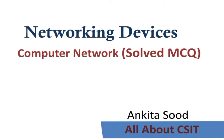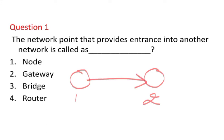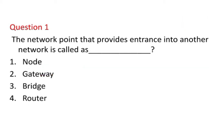So here we are going to discuss multiple choice questions related to the functionalities and working of all those networking devices. The first question is: the network point that provides entrance into another network is called? This is a simple question — there are two networks, network one and network two, and data is being transmitted from one to the other. So which networking device is used? Options are: nodes, gateway, bridges, or routers.